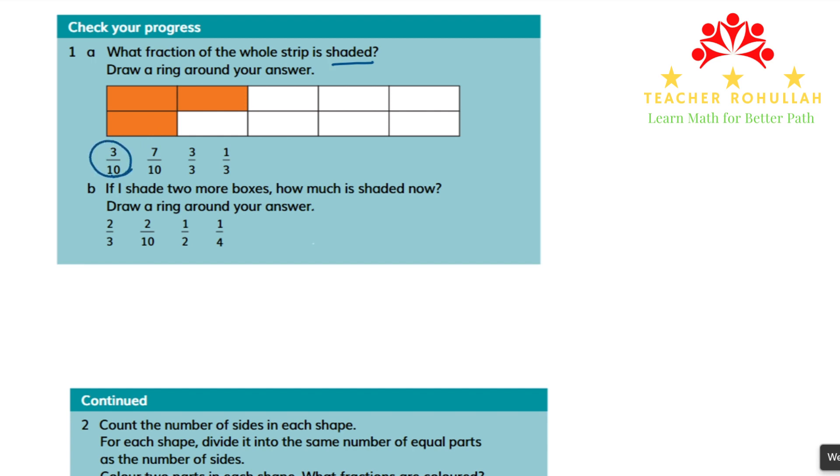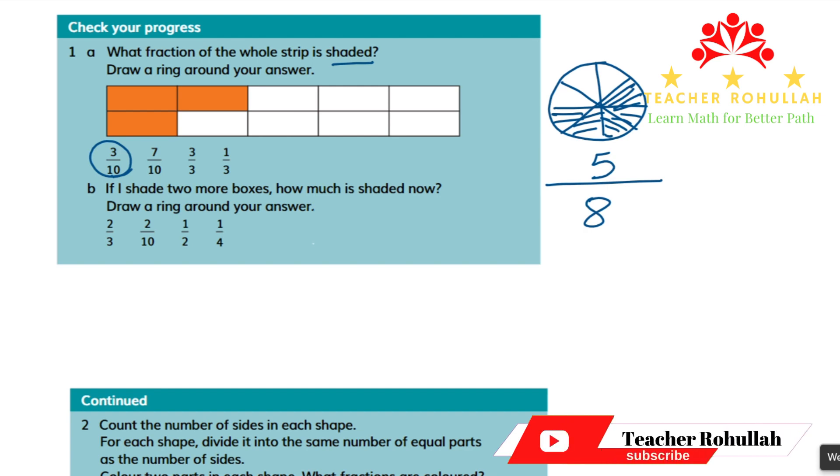You know that fraction is showing part of the whole. So we have to count the number of equal parts of the whole shape, then write those equal parts under the fraction bar. Suppose we have a circular shape cut into eight equal parts. Out of eight, we shade five of them. The denominator is eight, and the number of parts that are shaded is the numerator. So the fraction is five-eighths.